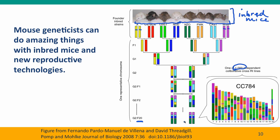These mice would have different segments of DNA in different combinations from their eight different great-great-great-great-great-great-great-grandparents. The researchers were then able to take these heterozygous mice and turn them into homozygous mice. Each strain is fully homozygous at all chromosomes, but each chromosome is a patchwork of alleles from the different inbred strains the research started with. So they now have a thousand genetically distinct but reproducibly homozygous and true-breeding strains to carry out medical research on.